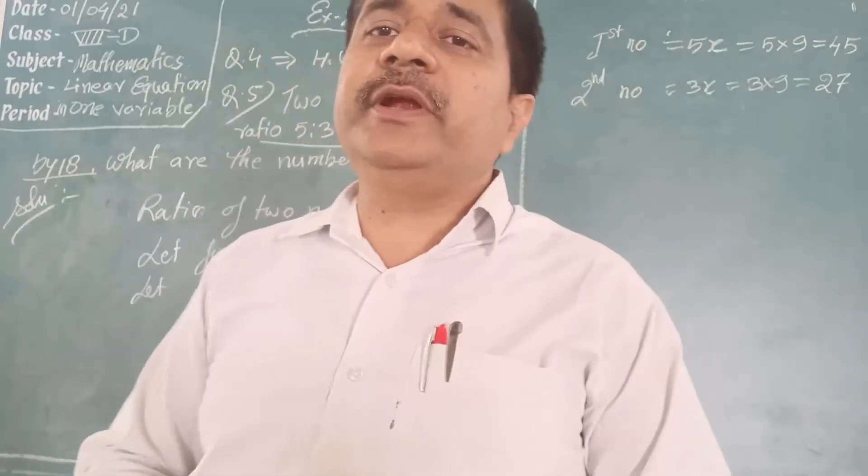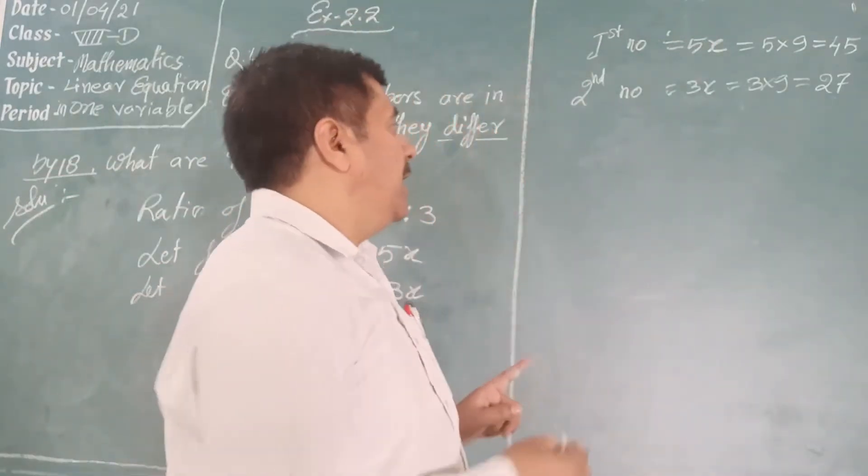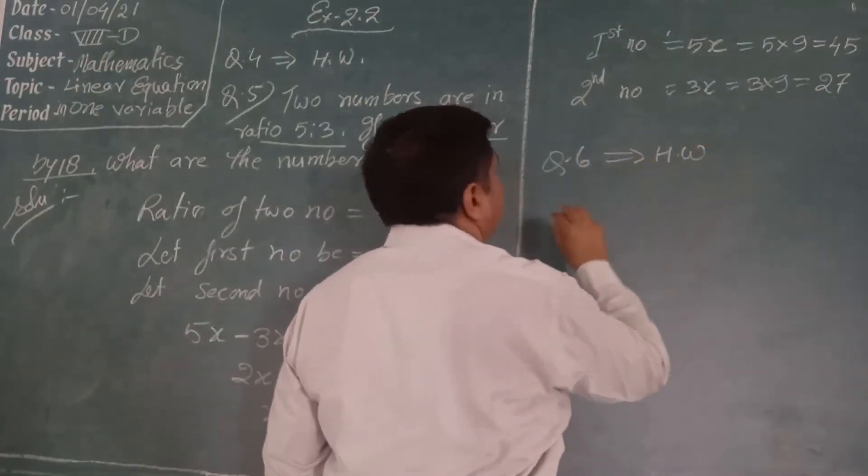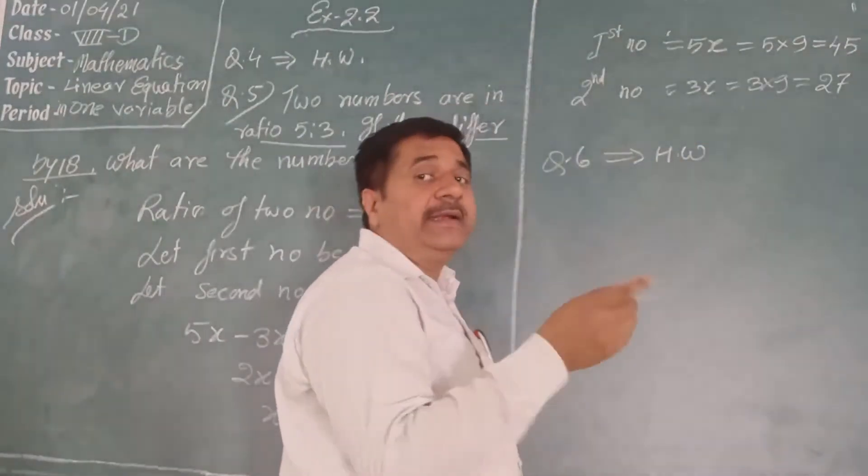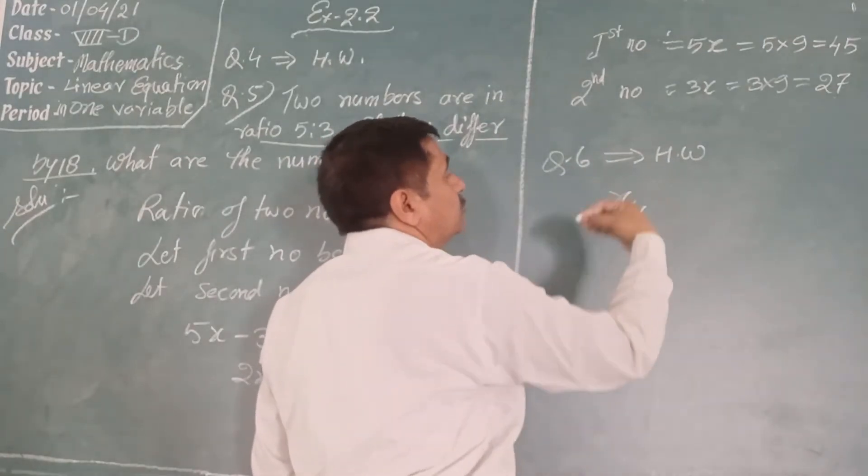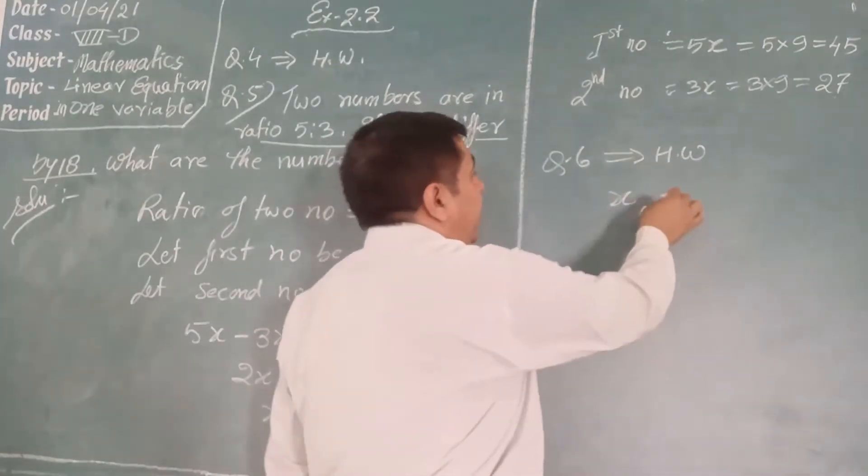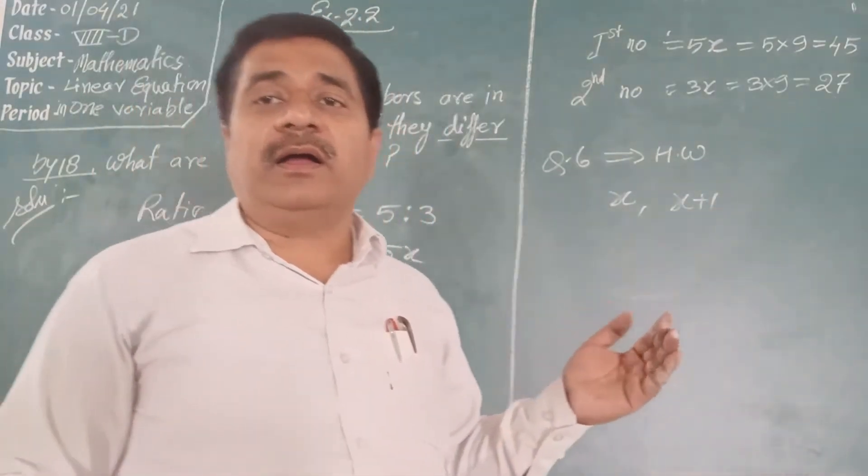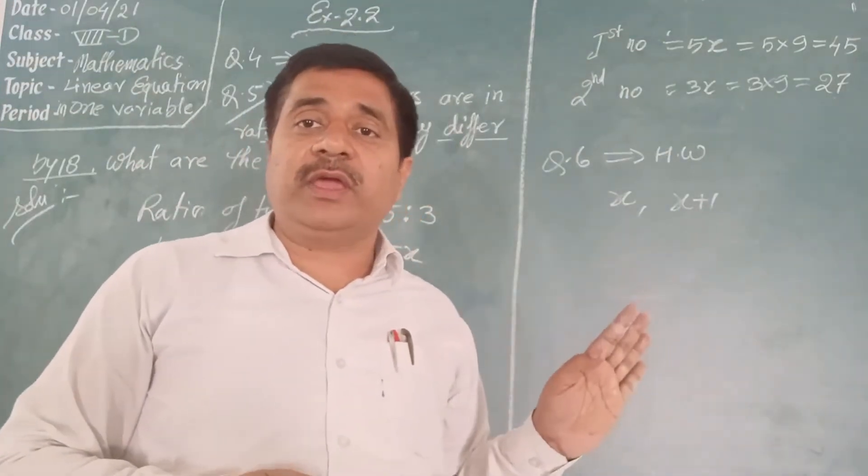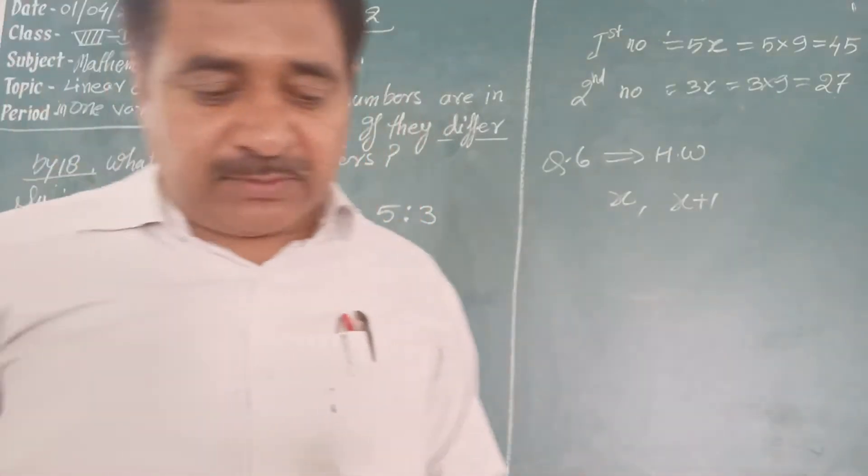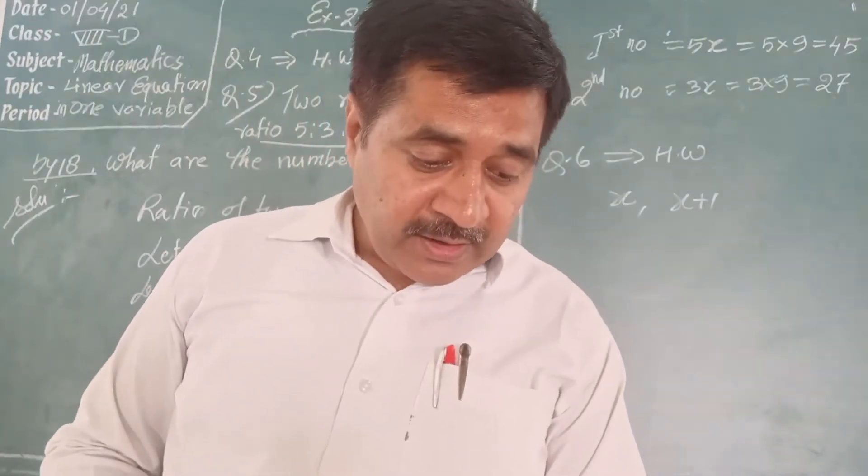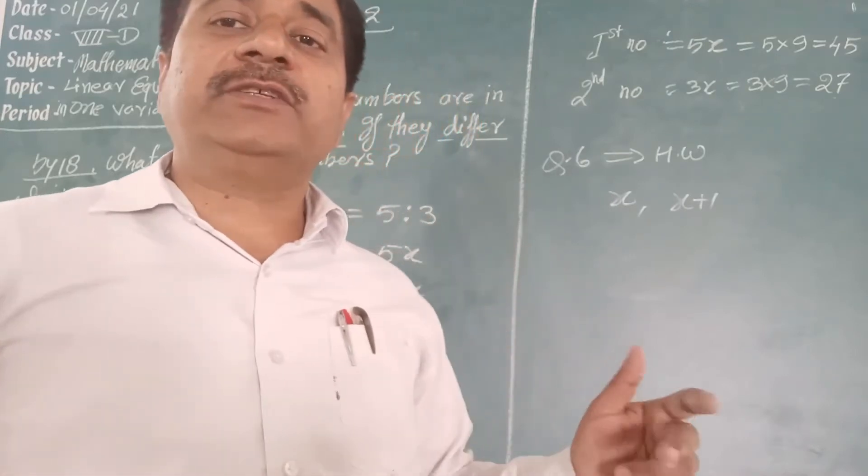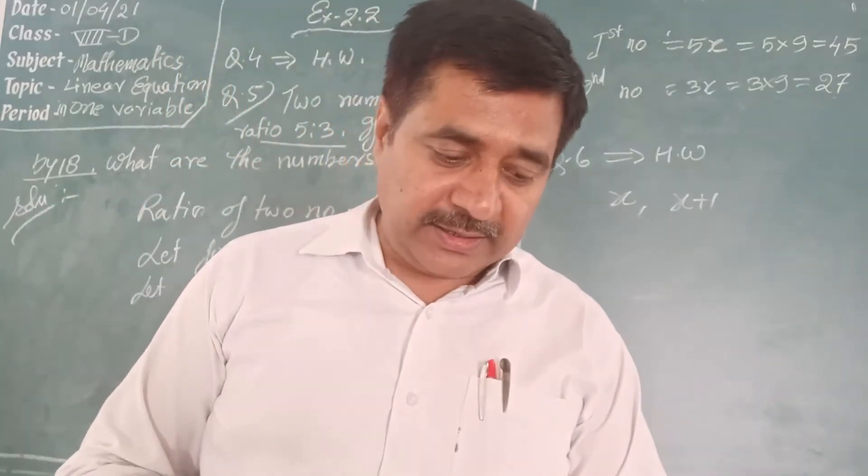Now student, question 6 for homework. Two consecutive numbers - first number is x, then another number is x plus 1. Sum of two consecutive integers is 51, so x and x plus 1 equals to 51.